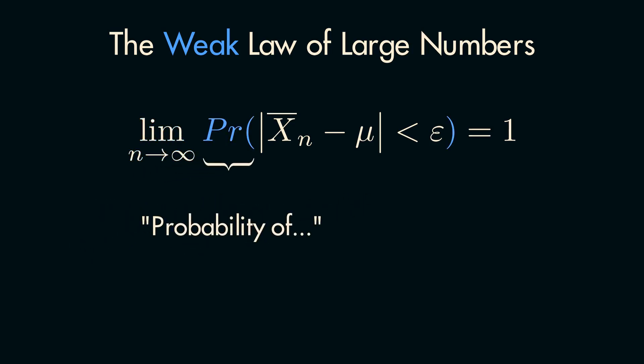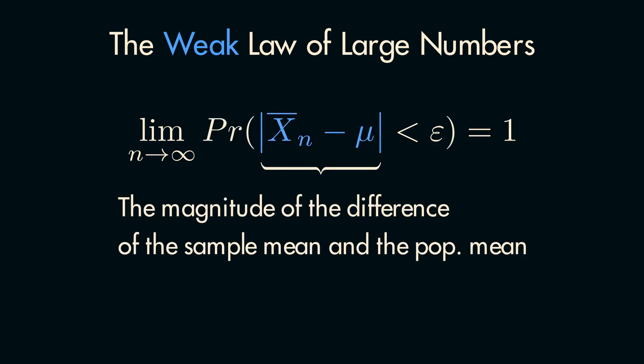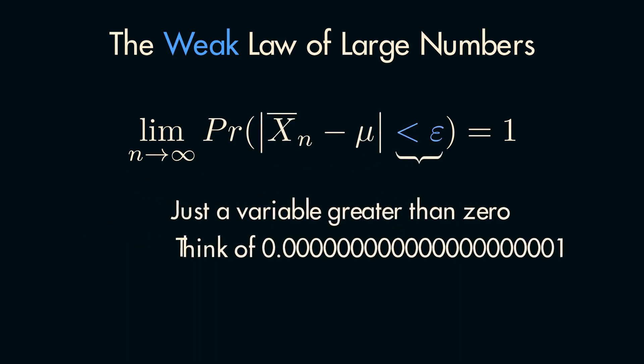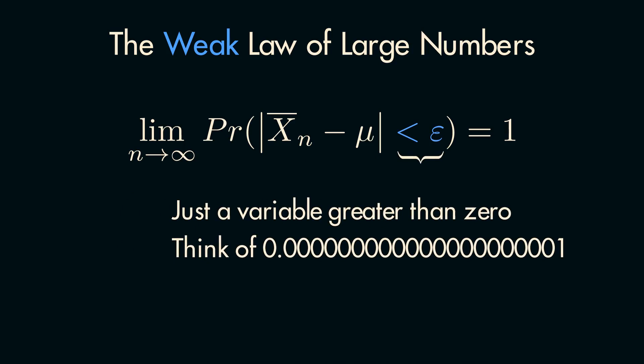Next, Pr means the probability of, and the term on the left side of the inequality represents the magnitude of the difference between the sample mean and the population mean, essentially how far away the sample mean is from being the population mean. This epsilon symbol on the right may be new to you, but it's actually just a variable that in this context can be any positive number, that is epsilon is greater than zero.